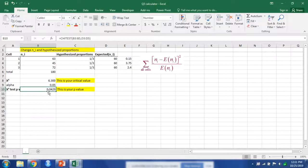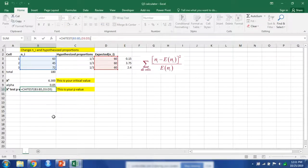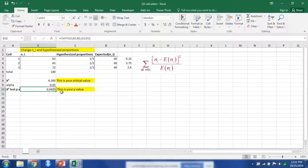Excel has a chi-square test function, so what it does is it runs a chi-square test of the observed values and the expected values, and it will give you a p-value. In this case, it is 0.0429.